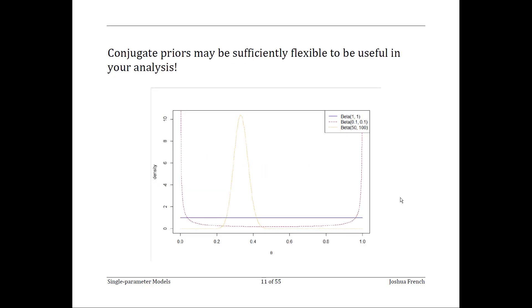I do want to defend conjugate prior distributions a bit because they often get a bad reputation for being too simple and unrealistic. In the right context, a conjugate prior may be sufficiently flexible to meet your needs. If so, simplify your life and use it.